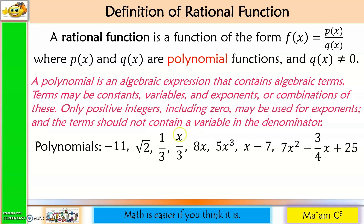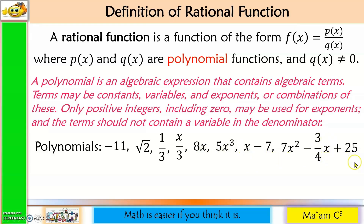Here are examples of polynomials. Negative 11 is a constant. Square root of 2 is also a constant, approximately equal to 1.41. One-third is also a constant in fraction form. x over 3 is okay, though it has a denominator — the denominator is not a variable. 8x is a combination of a constant and a variable. 5x³ is a combination of a constant and a variable raised to a positive integer. Also: x minus 7, and 7x² minus (3/4)x plus 25.